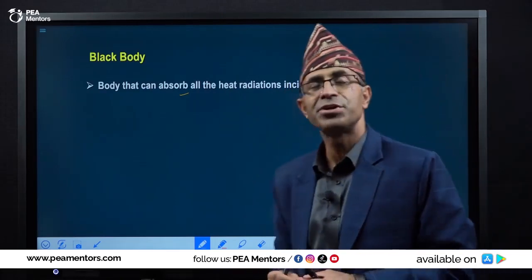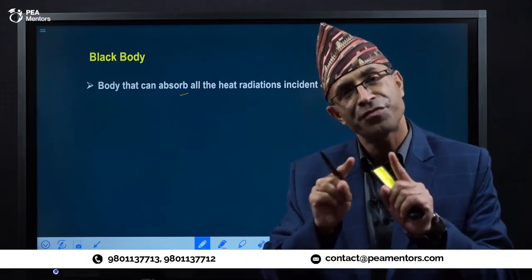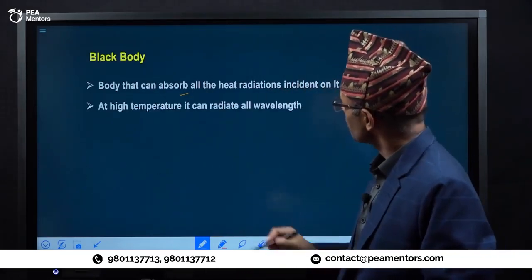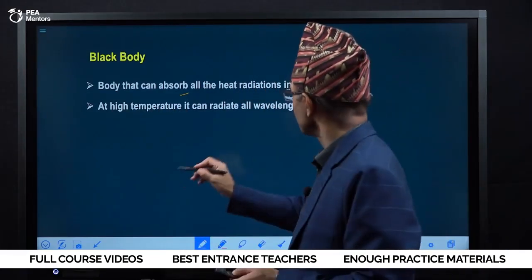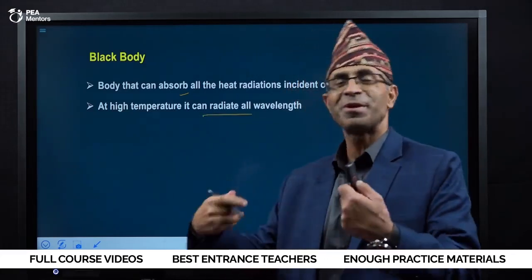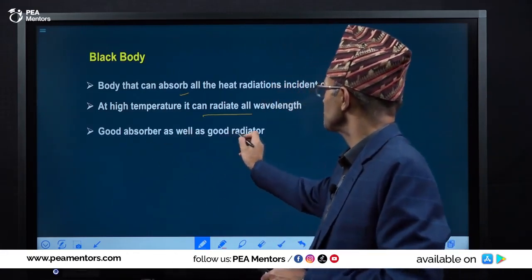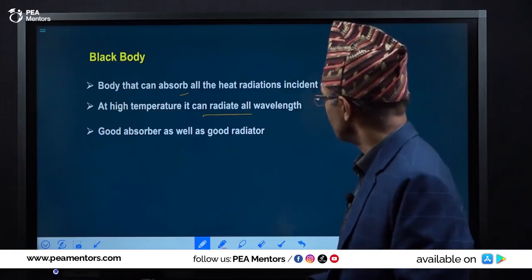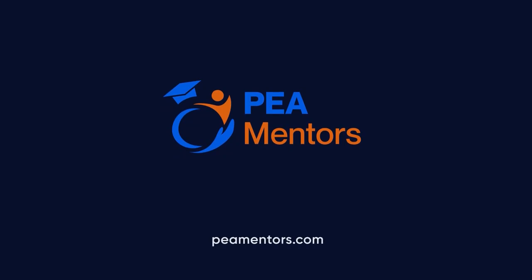When all wavelengths fall on a body and it can absorb all those different wavelengths, that is called a black body. At high temperature it can absorb and also radiate all wavelengths — it is a good absorber as well as a good radiator. A bad absorber is a bad radiator. Black body: good absorber as well as good radiator. Be a Mentors — a complete digital platform for your aspirations.